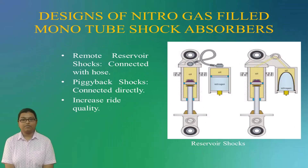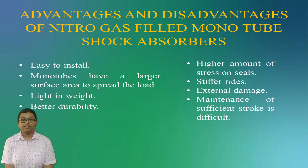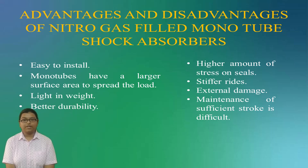There are various designs of Nitro-Gas Mono-Tube Shock Absorbers. One of them is a reservoir shock. Reservoir shocks have a separate reservoir in which the nitrogen gas is present. They can have the reservoir connected with a hose to the main shock body, like in remote reservoir shocks, or the reservoir can be directly connected with the main shock body, like in piggyback shocks. These shocks provide a much larger area for oil and gas to travel, thus increasing their reliability. Advantages of the Nitro-Gas Mono-Tube Shock Absorber are: they are easy to install and can be mounted at any angle; they have a larger surface area to spread the load, distributing pressure evenly over the entire shock.